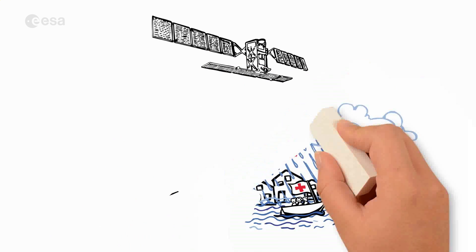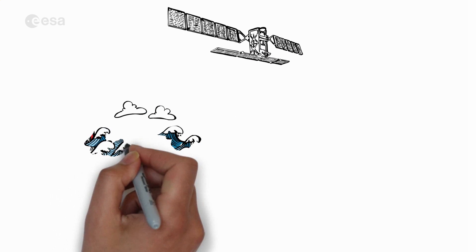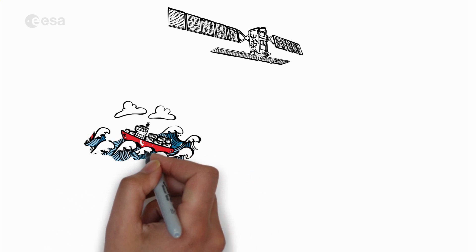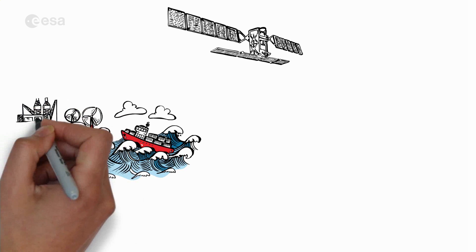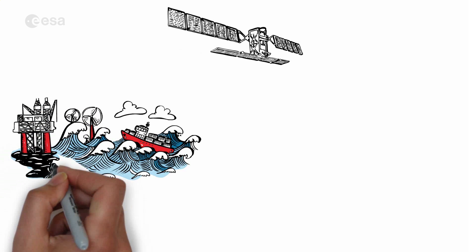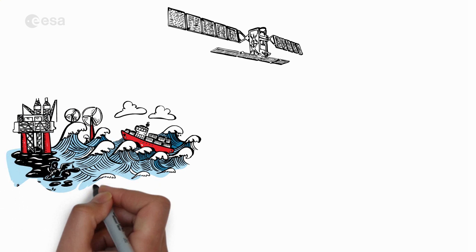Just as easily, Sentinel-1 can monitor the oceans and their ice sheets over a long period of time, and tell us about wave heights, potentially dangerous for ships and offshore wind farms. Or about oil pollution, leaked from platforms and vessels on the seas.